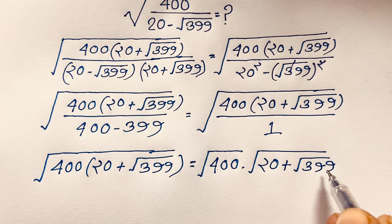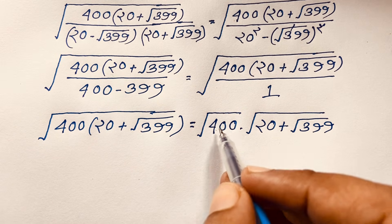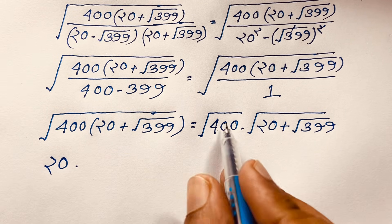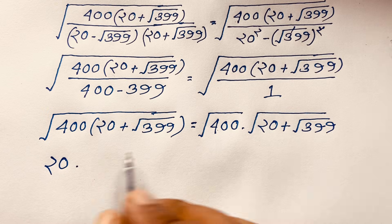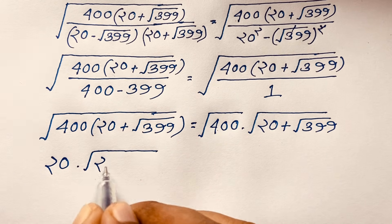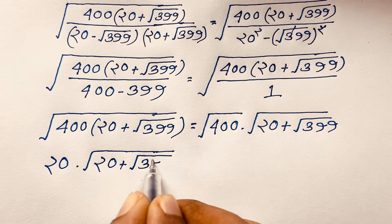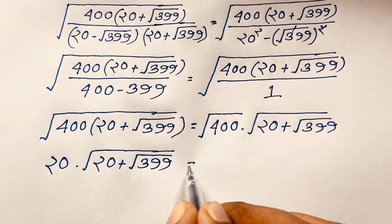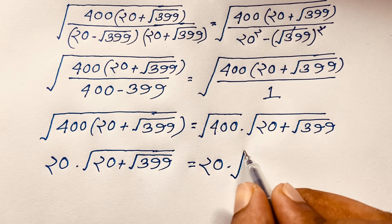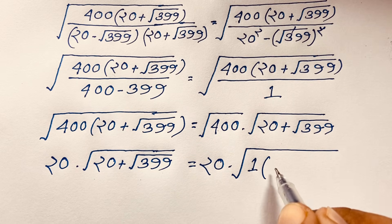Now, square root of 400 equals 20. So we get 20 times square root of (20 plus square root of 399).